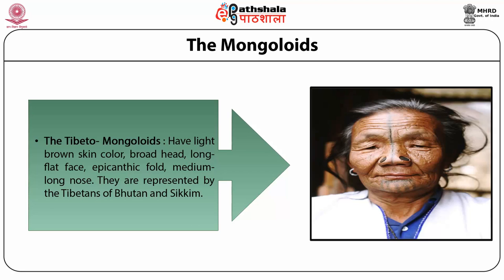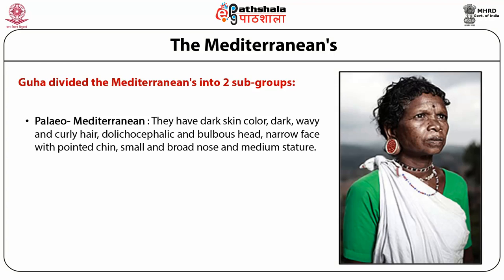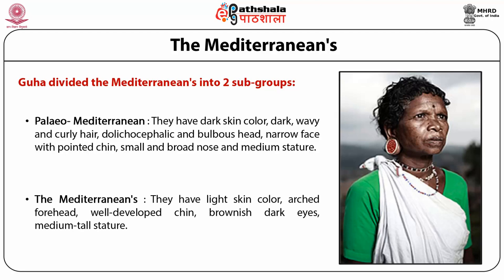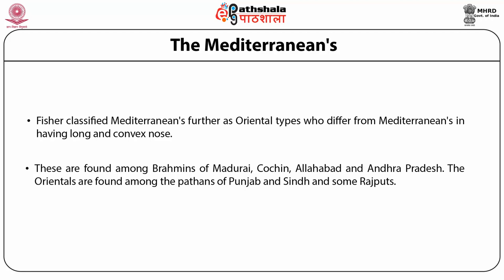Guha divided the Mediterraneans into two subgroups: Paleo-Mediterranean and Mediterranean. Paleo-Mediterraneans have dark skin color, dark wavy and curly hair, dolichocephalic and bulbous head, narrow face with pointed chin, small and broad nose and medium stature. The Mediterraneans have light skin color, arched forehead, well-developed chin and brownish dark eyes, and are medium to tall in stature. Fisher classified Mediterraneans further as an oriental type who differ in having a long and convex nose, found among Brahmins of Madurai, Kochi, Allahabad and Andhra Pradesh. The orientals are found among Pathans of Punjab, Sindh and Rajputs.